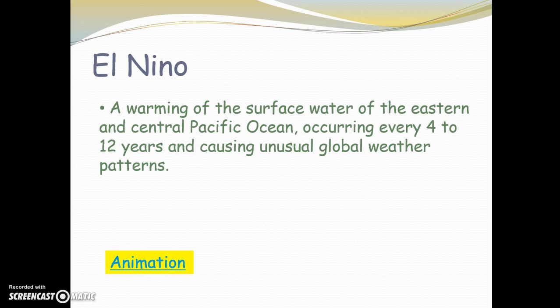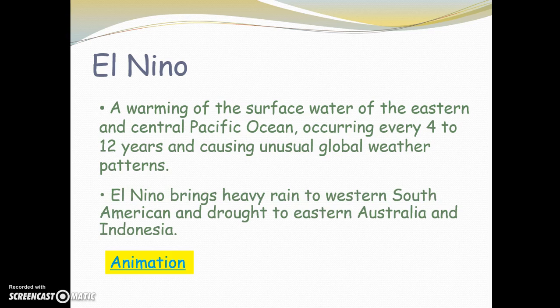El Niño brings very heavy rain to western South America and drought to eastern Australia and Indonesia. So the water starts moving towards this side of the world, and Australia and Indonesia are going to experience drought because all the rainfall has moved to this part of the world. A lot of rainfall can also be very bad for us because it can cause flooding. If you were watching the news during the spring, you'd notice that there were several deaths in Texas due to heavy flooding and a lot of destruction. So a lot of rainfall isn't always great either.